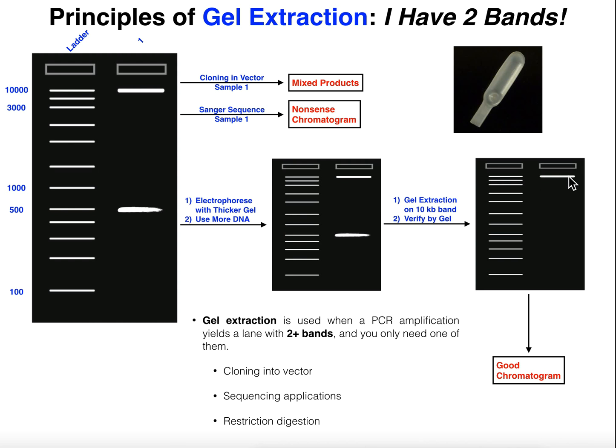The gel extraction has now isolated the gene you wanted. You can directly send that off for sequencing and you should get decent results — a good chromatogram, a good sequence. And so that's the principle of gel extraction.